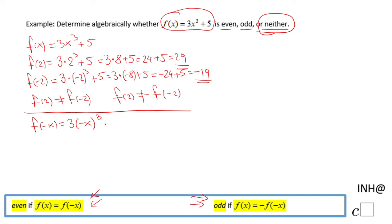(-x)³ means (-x)(-x)(-x) = -x³. So the final form is f(-x) = -3x³ + 5.